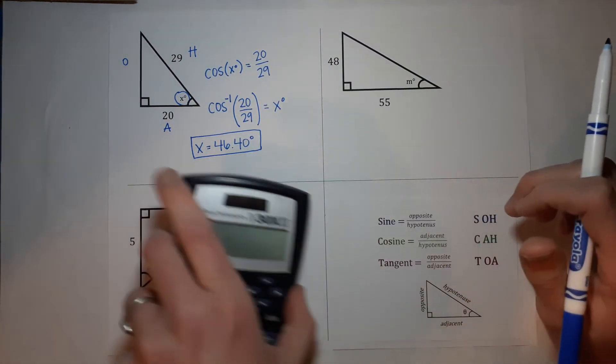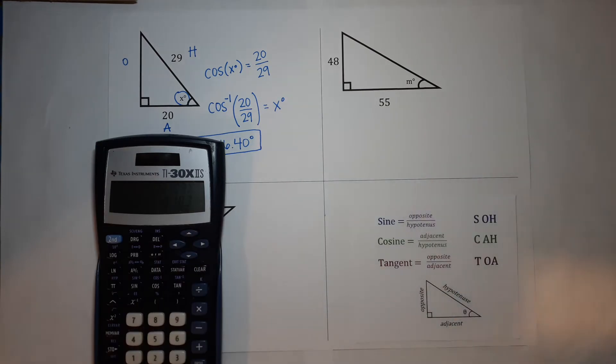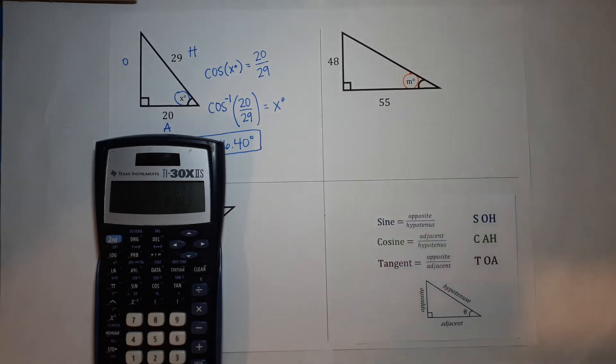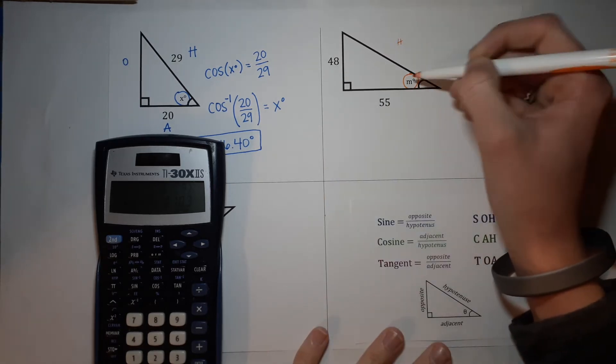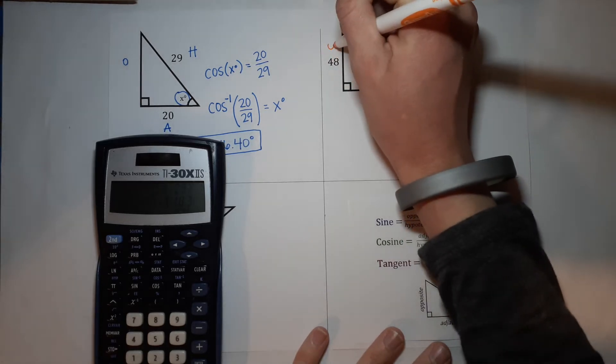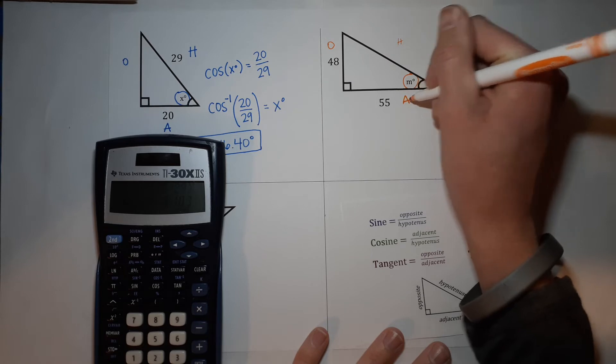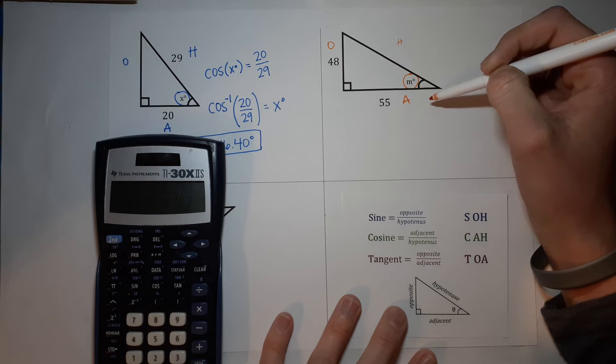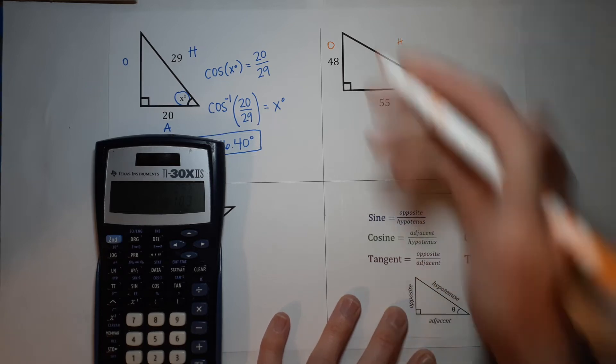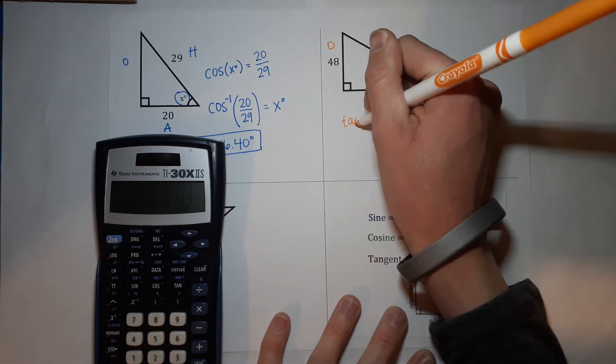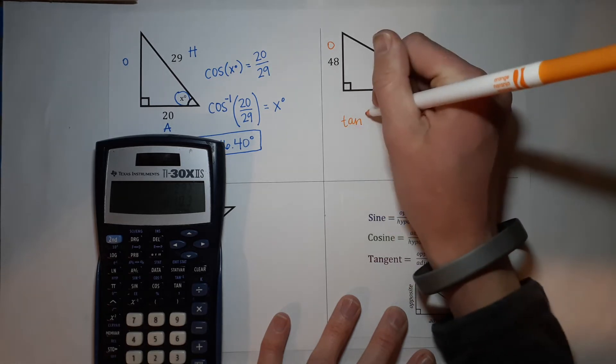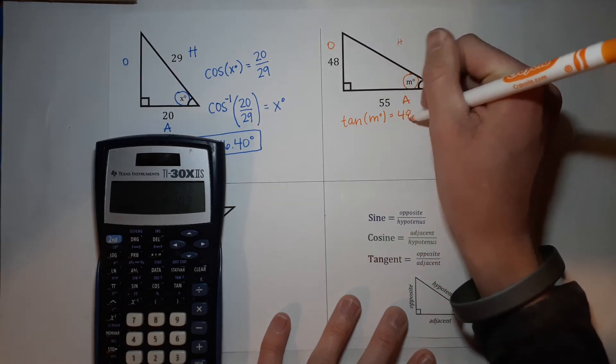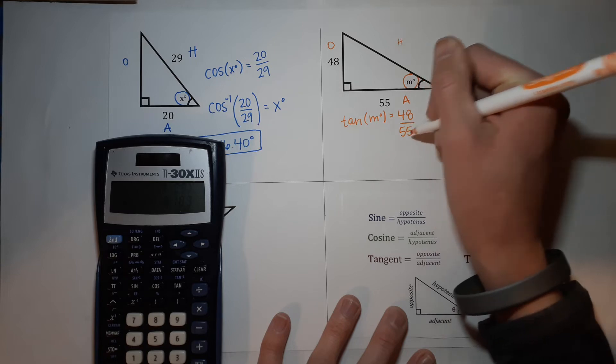Now here's another one. The angle this time is M. I like to circle it just so I make sure I label my opposite and adjacent. So this is the hypotenuse, this across from it further away is opposite, right next to it is adjacent. The numbers we have are opposite and adjacent, so which one uses that? Tangent. So how do we set this up again? We do tangent of M degrees equals opposite, which is 48, over adjacent, which is 55.